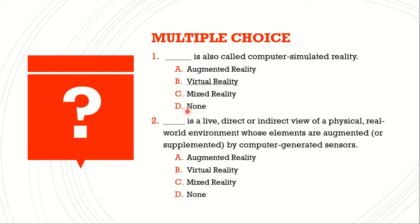Question number two. Blank is a live, direct or indirect view of a physical, real-world environment whose elements are augmented by computer-generated sensors. A. Augmented reality. B. Virtual reality. C. Mixed reality. D. None of the above. The answer is A, augmented reality.